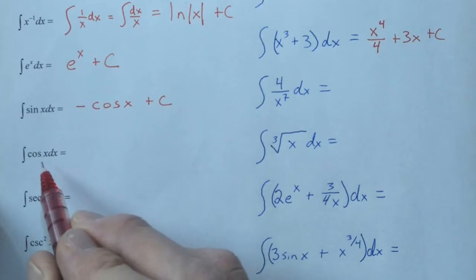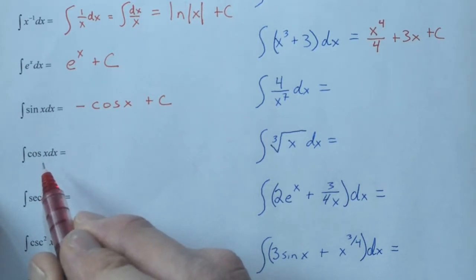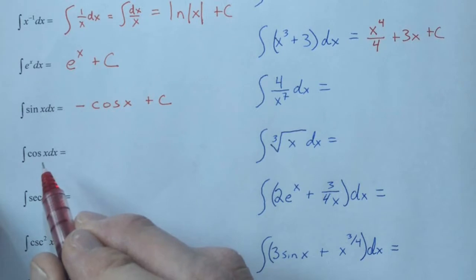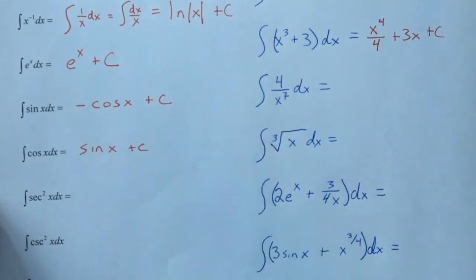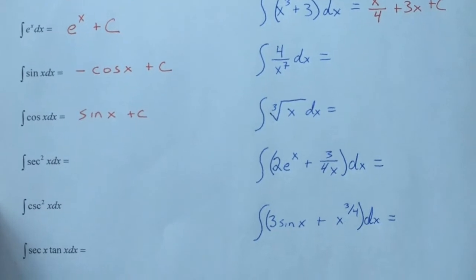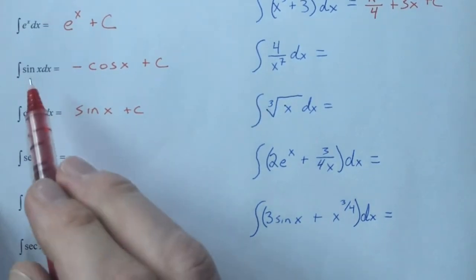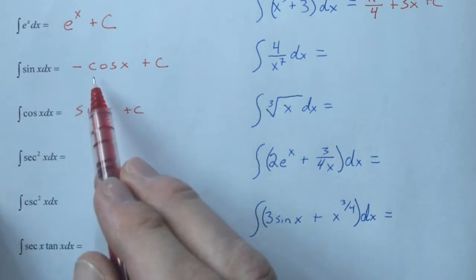This one's not as bad. What's the antiderivative of cosine? What function derives to cosine? That's right. Sine does. So this is going to cause some confusion, and this is where you really want to know your derivatives and your antiderivatives, because the derivative of sine is cosine, but the antiderivative of sine is the opposite of cosine.